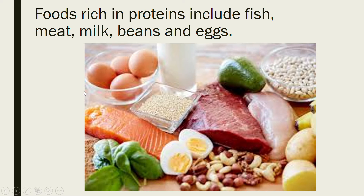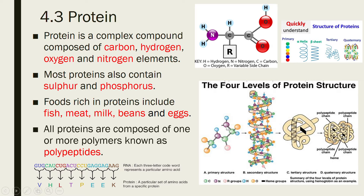This picture is showing food that is rich in proteins: salmon, fish, all types of fish, different meats, milk, different types of beans, and also eggs. These are the foods that are rich in proteins. Now let us look into protein itself, being a very important cell composition.